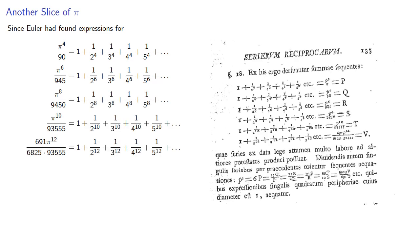And we could go further. Since Euler had found expressions for the sum of the reciprocal 4th, 6th, 8th, 10th, and 12th powers, these could be turned into other product forms.